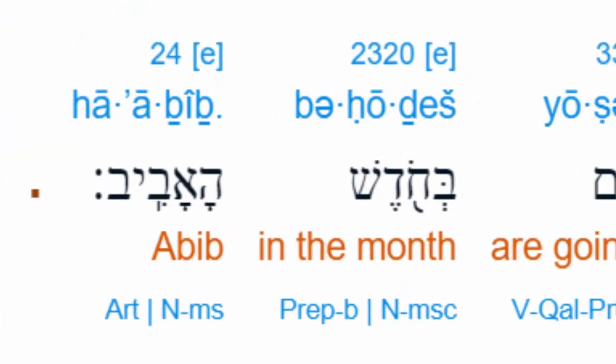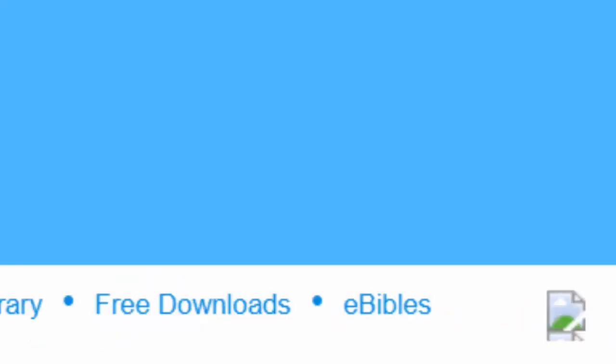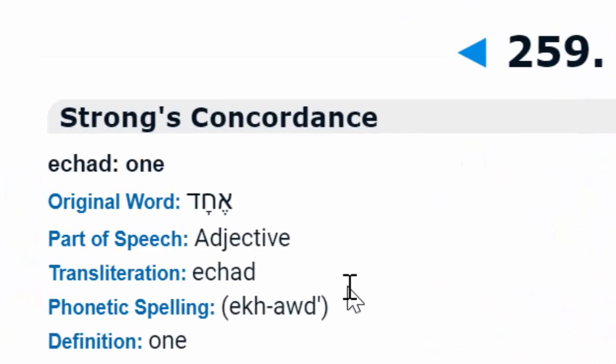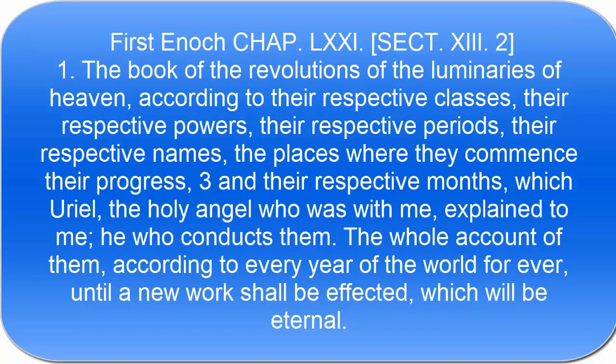So what does Abib mean? It simply means new — or first. When we look at the Hebrew word for 'one,' it actually starts with an Aleph too. Abib is closer to 'one' than it is to 'barley.' Abib has nothing to do with barley — it's just saying that was the first month. And if you want to know when the first month is, you actually have to go to the Book of Enoch. They've hidden Enoch from us, so now we're ignorant of how the calendar works — and people are trying to come up with alternative solutions, using barley as a substitute.